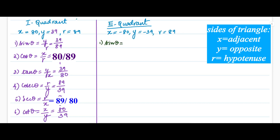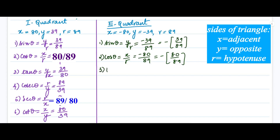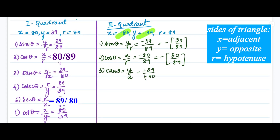For the third quadrant, x = -80, y = -39, r = 89. Sine theta = y/r = -39/89. Cosine theta = x/r = -80/89. Tan theta = y/x = (-39)/(-80); the negative signs cancel, giving positive 39/80.